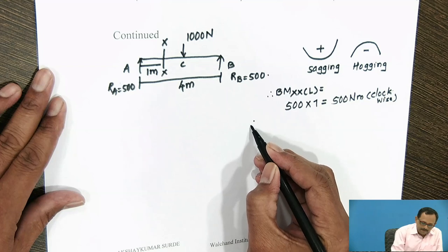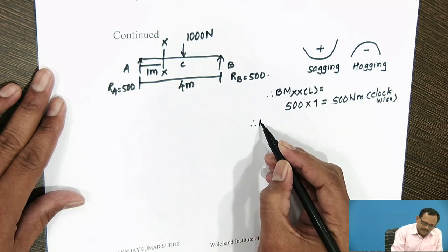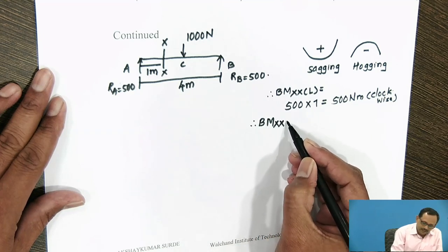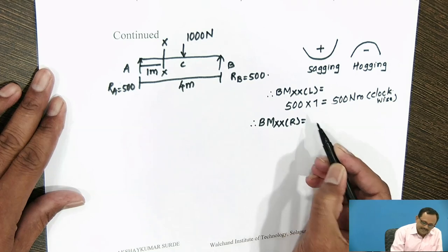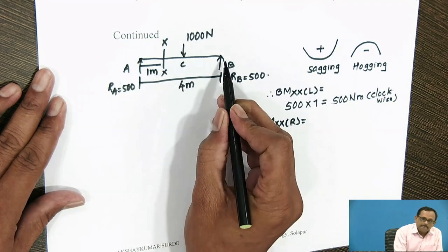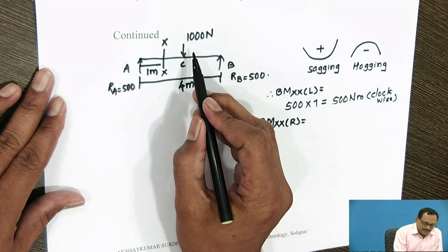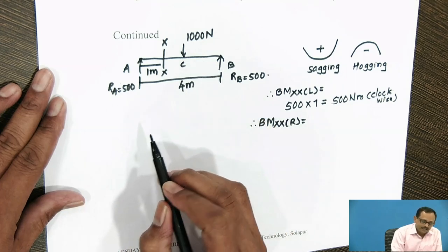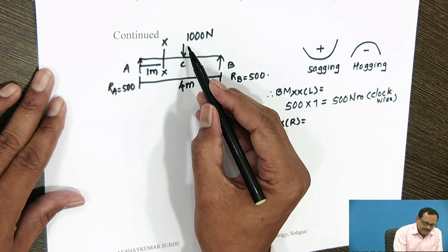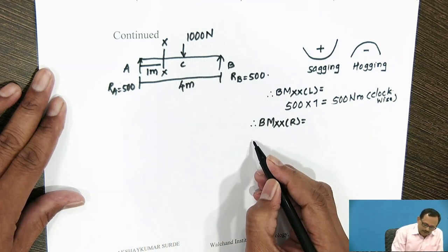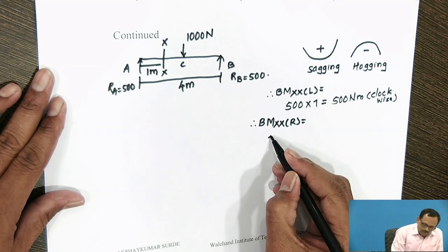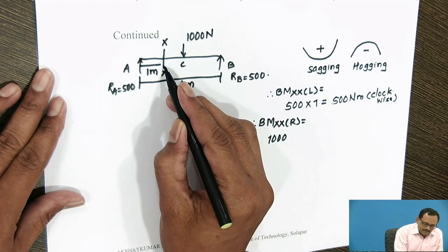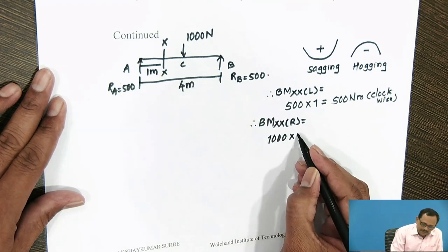Similarly, when we consider the bending moment at section XX to its right side — what are the various moments due to the load and reaction to the right side? There is a 1000 N load and its distance from section XX is 1 meter. This moment is acting in the clockwise direction.